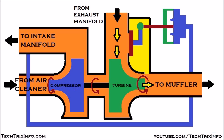The compressor gets its drive from the turbine. When the exhaust smoke hits the turbine, the turbine rotates and is mechanically linked through the shaft to the compressor, so the compressor gets the drive. The compressor rotates, the air sucked in gets compressed, and it is pushed into the intake manifold of the engine. More compressed air into the intake manifold means more oxygen available, so the engine can burn more fuel and produce more power, increasing the efficiency of the engine.